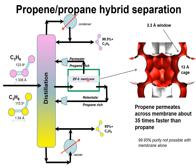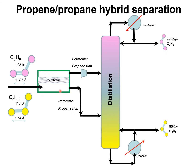The membrane separation unit can be placed downstream, where a side-stream product is removed. A permeate which is rich in propene is fed to the rectifying section, and a retentate which is rich in propane is fed to the stripping section. A membrane unit on its own is unable to meet the purity requirement required by industry. The membrane unit can also be used in a different construct.